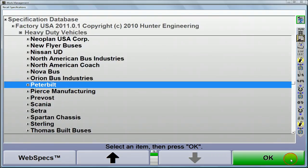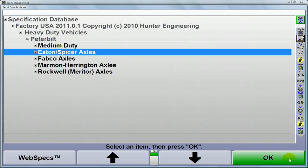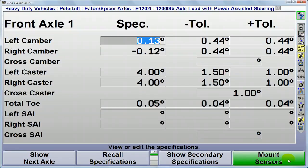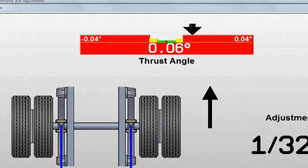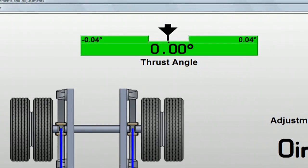Then recall specifications. Having specs for comparison allows the aligner to highlight which adjustments are needed and provide a live adjustment display to make the corrections easy.